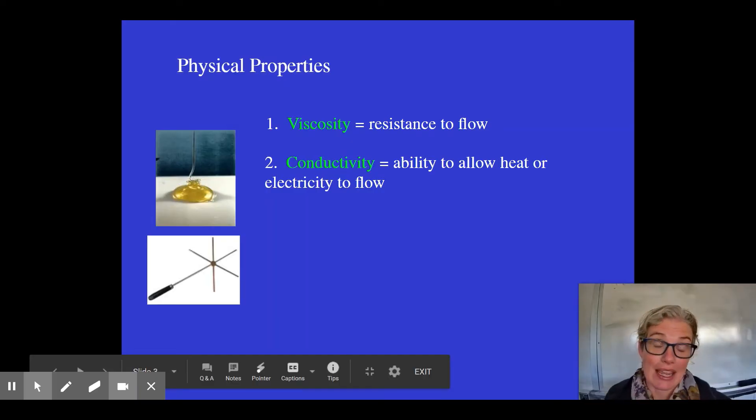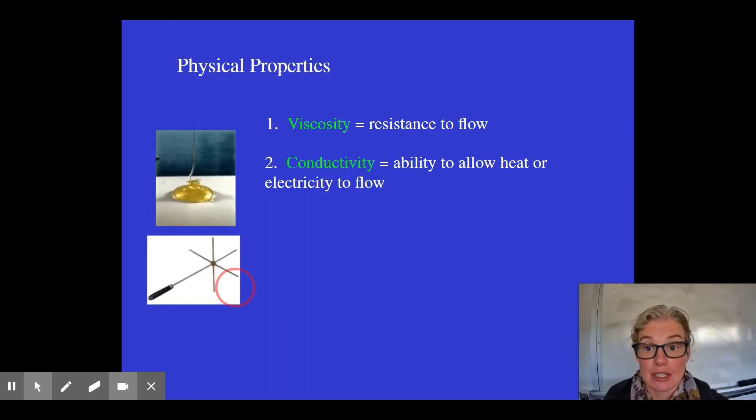Conductivity—pans are made of metal because they allow heat to flow through them. We make wires out of metal because they allow electricity to flow through them. They're good conductors.